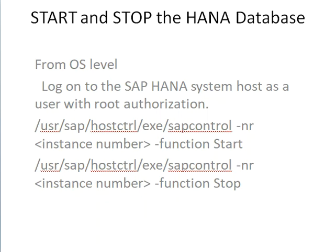Start and stop the HANA database from OS level. Log on to the HANA system as Root. Go to the path /usr/sap/hostcontrol/exe/sapexe. The command is: sapcontrol -nr <instance-number> -function Start. To stop the HANA database, use the same path with the command sapcontrol -nr <instance-number> -function Stop.